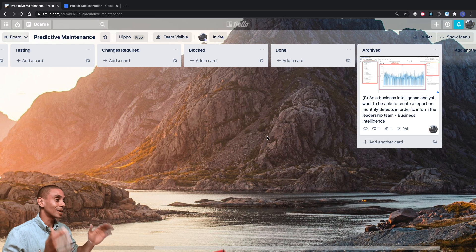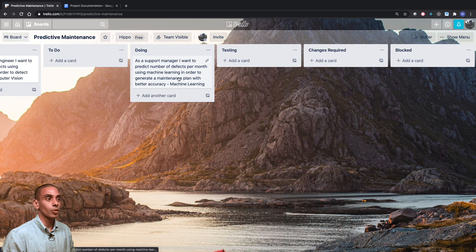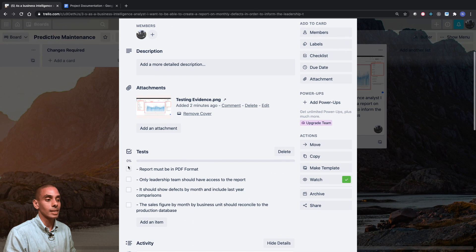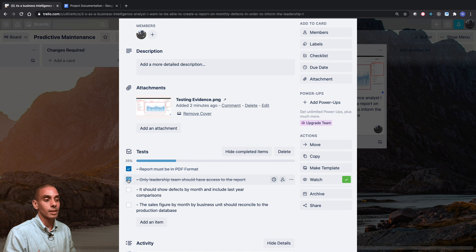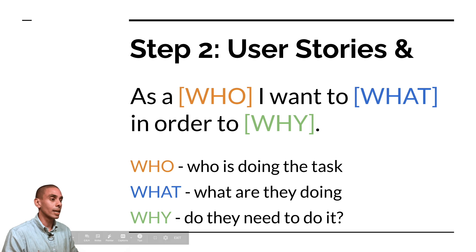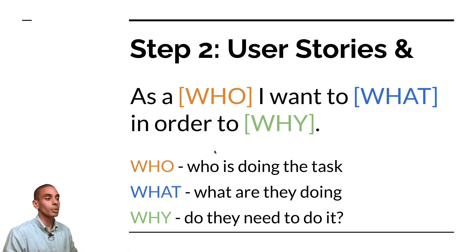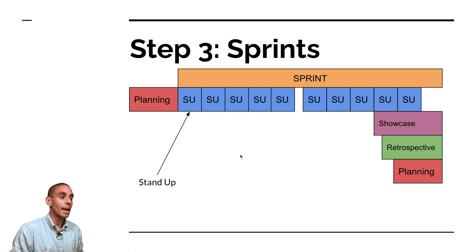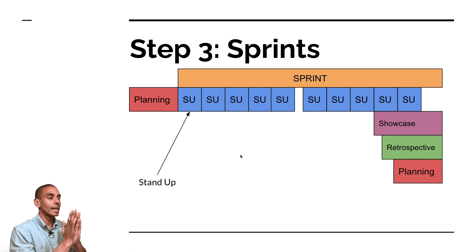That's how you manage your user stories — you can also have your tester tick off the checklist items as they test each one. The next thing to look at is how you plan your sprint. A sprint is basically a time-boxed period — typically two, three, or four weeks — that you use to condense what you're going to get done and focus on what you want to achieve.